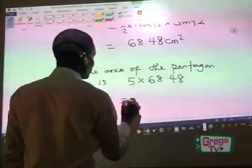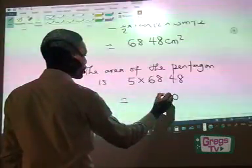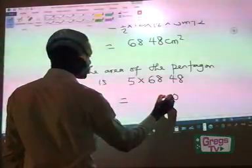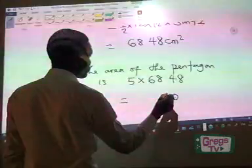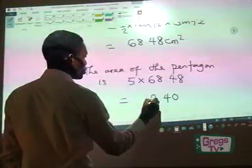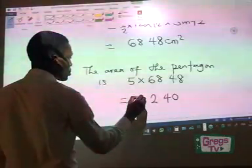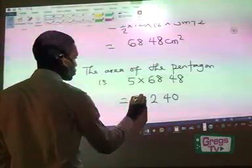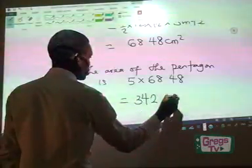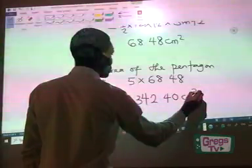And that gives you 5 times 8 is 40, right? 0 carry 4. 5 times 4 is 20. Add 40. That's 24. You have 4 carry 2. 5 times 8 is 40. That will be 2 carry 4. 5 times 6 is 30 plus 4. That will give you 34. So you have 342.40 centimeters squared.